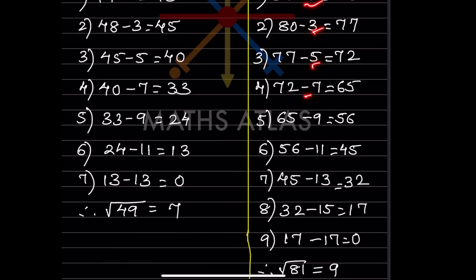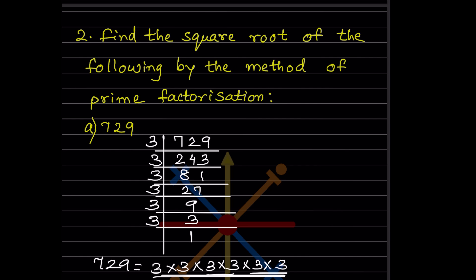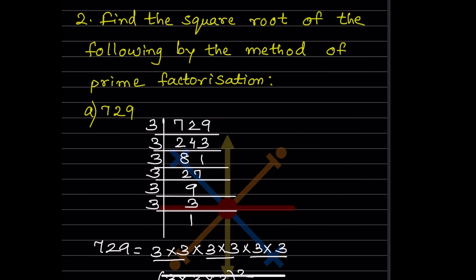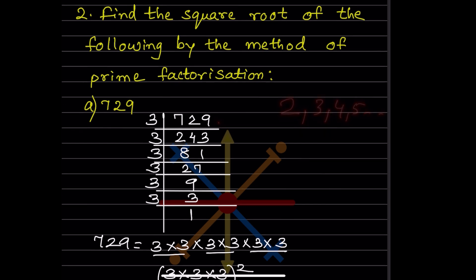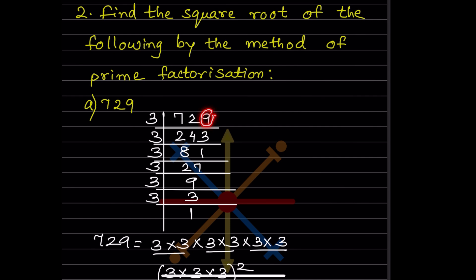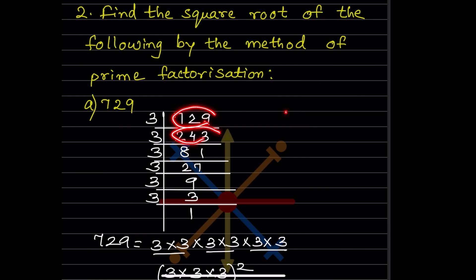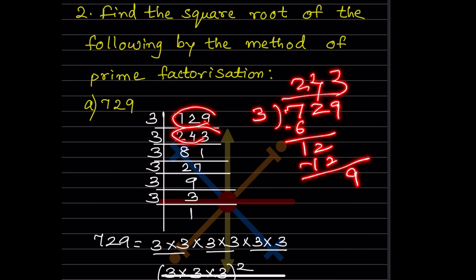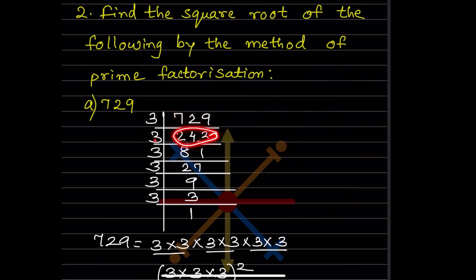The odd numbers used for 81 are 1, 3, 5, 7, 9, 11, 13, 15, and 17. Now they say find the square root by the method of prime factorization. In prime factorization we always start with the lower number 2; if not divisible by 2, then try 3, 5, and so on. For 729, it is not divisible by 2, so we go with 3. We keep dividing: 729 by 3 gives 243, 243 by 3 gives 81, and so on.